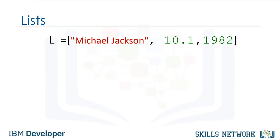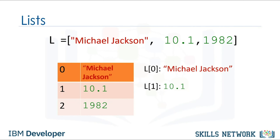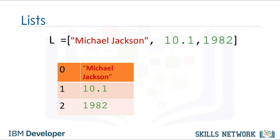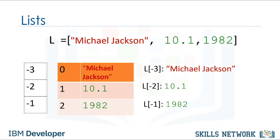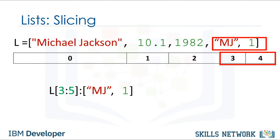Each element of a list can be accessed via an index. The first element can be accessed by the name of the list followed by a square bracket with the index number — in this case, zero. We can access the second element and also the last element. In Python, we can use a negative index. We can also perform slicing in lists — for example, to get the last two elements. Notice how the last index is one larger than the length of the list. The index conventions for lists and tuples are identical.